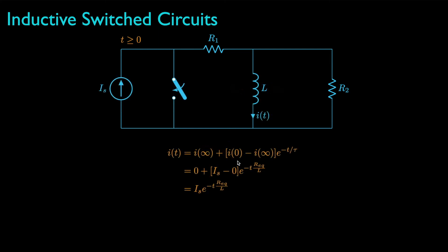Then we can use the initial value, the final value, and the time constant to determine the current for t greater than or equal to zero, which will be i sub s times e to the negative t times R equivalent divided by the inductance.